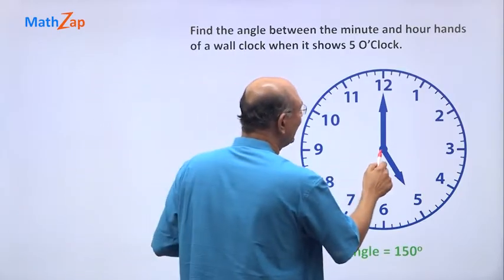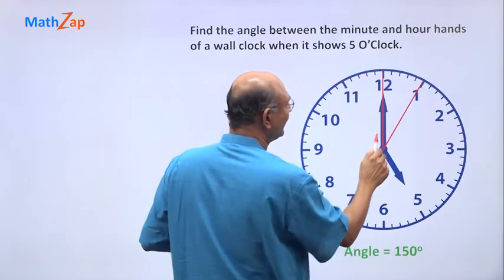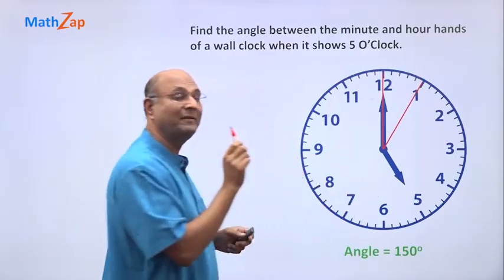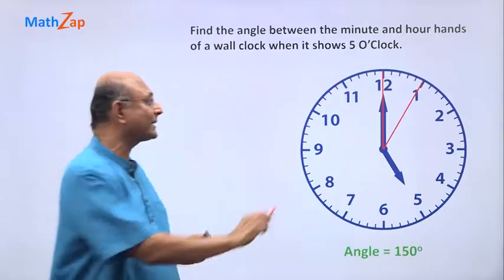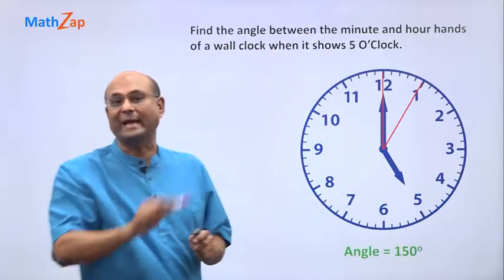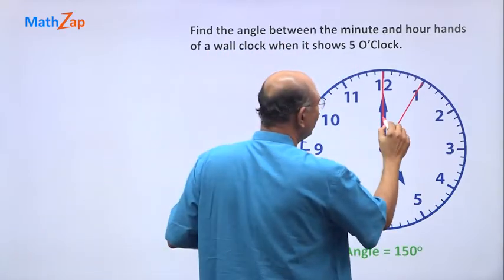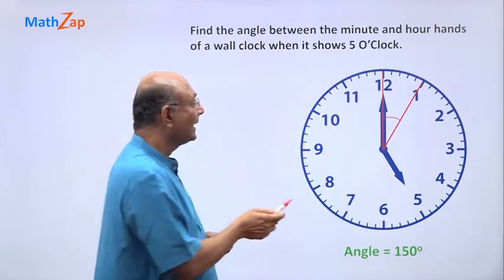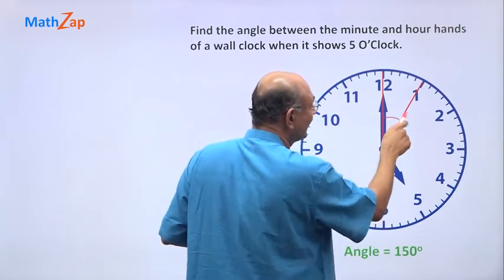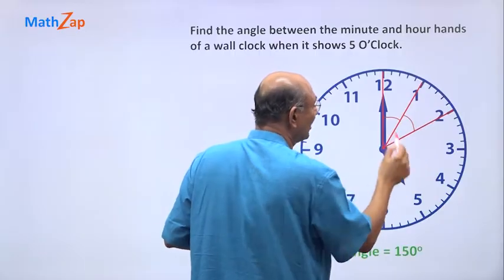If I draw a line here and there, this is giving us a small part of the complete angle. So if I call this a small part and I draw one more line here, I will get another small part.